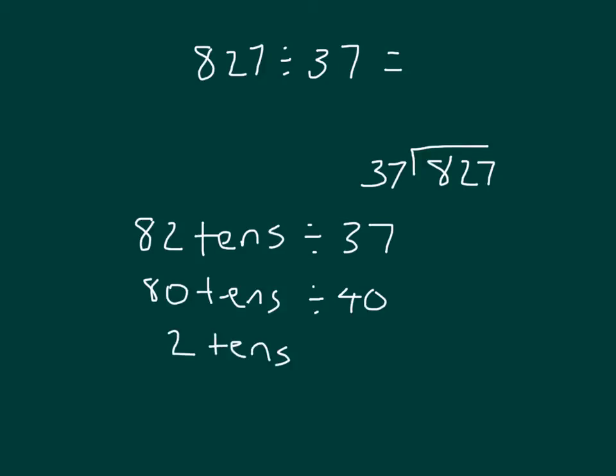And that is why that 2 goes directly above the other 2 there, within that number there. Our estimate should help us in figuring out the exact answer. 2 times 37, 2 times 7 is 14, 4, regroup the 1, 2 times 3 is 6, plus 1 is 7, and then we have 82 minus 74, which is 8.